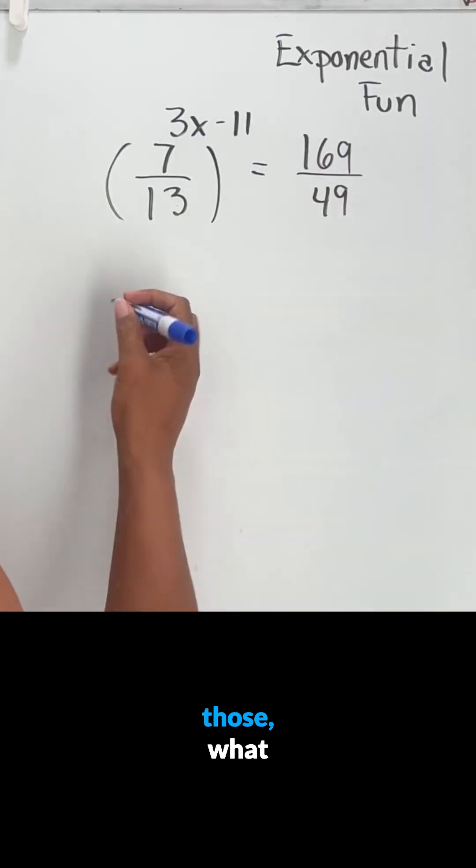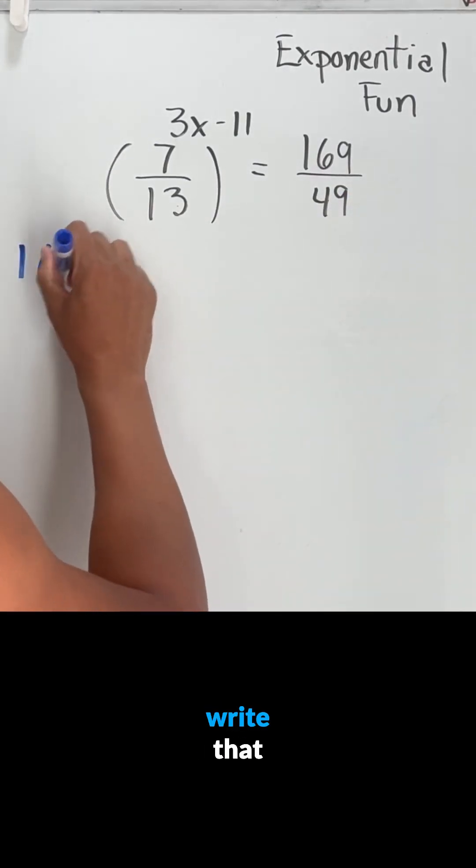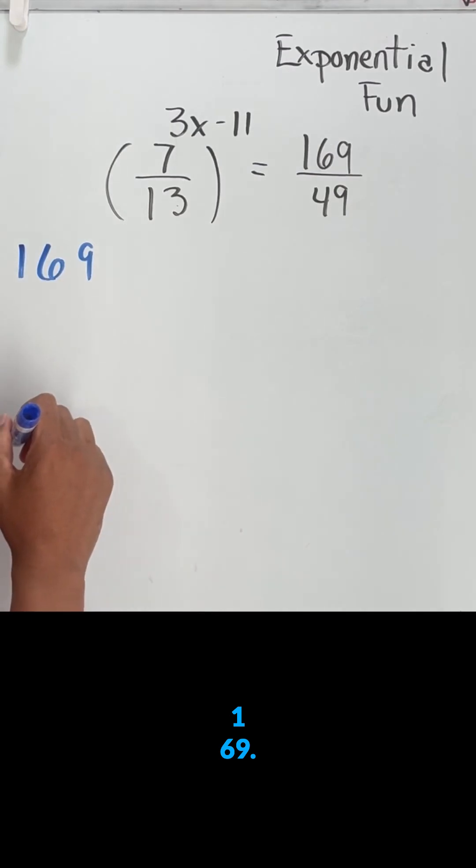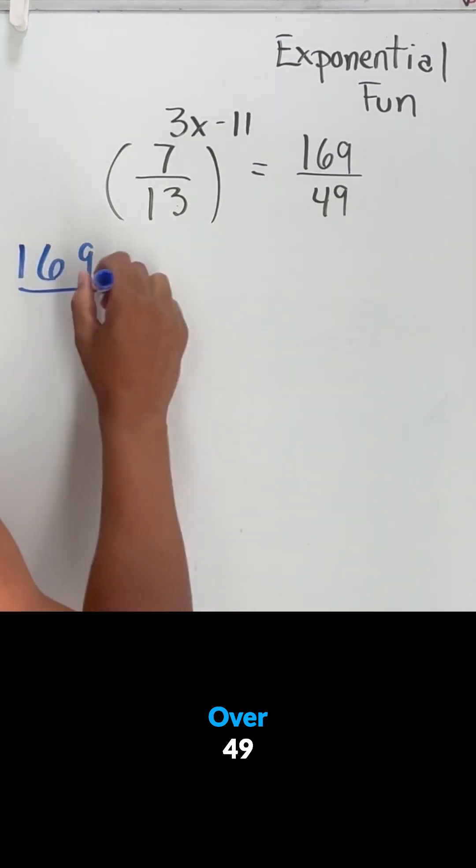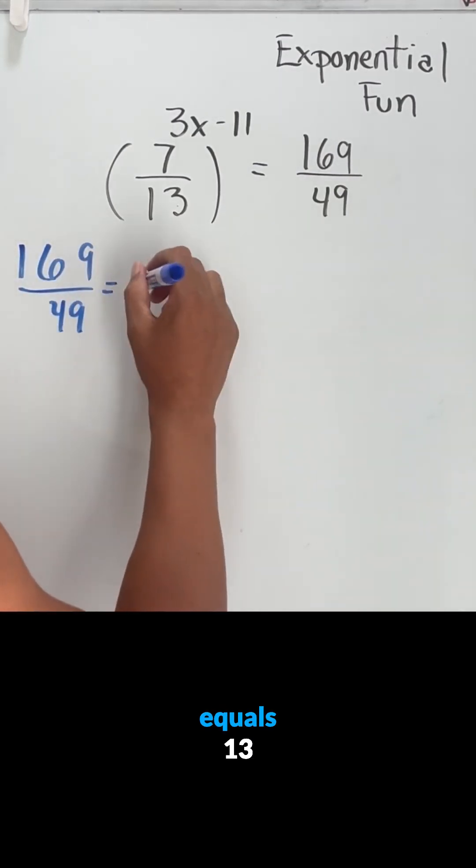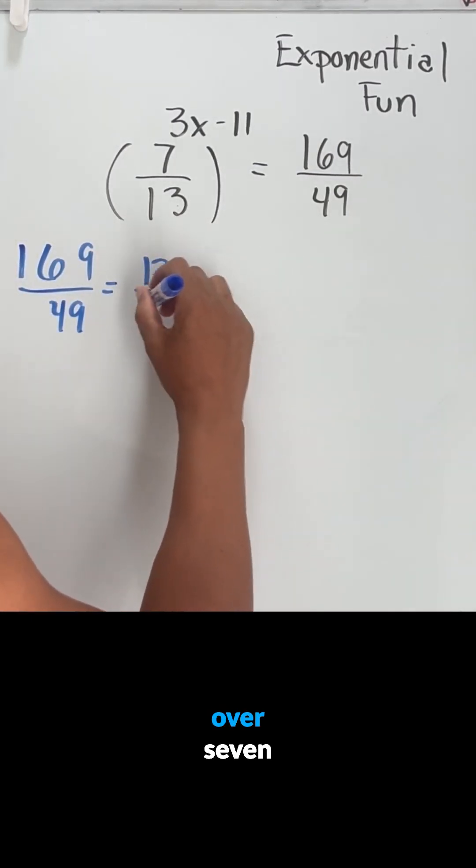If I take the square root of those, what I'm really going to say to the side, I'll write that. That 169 over 49 equals 13 over 7 squared.